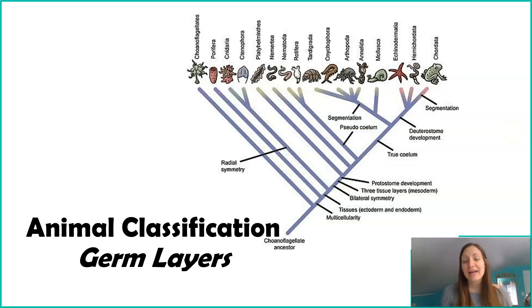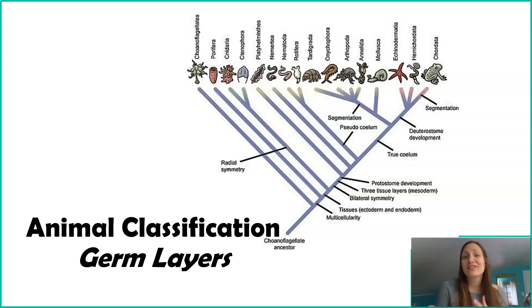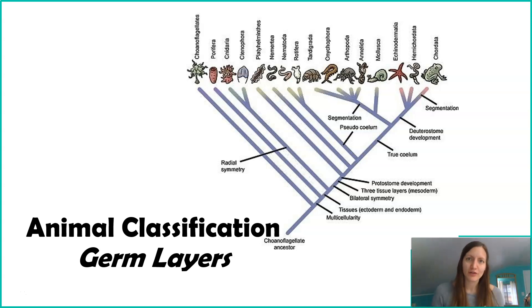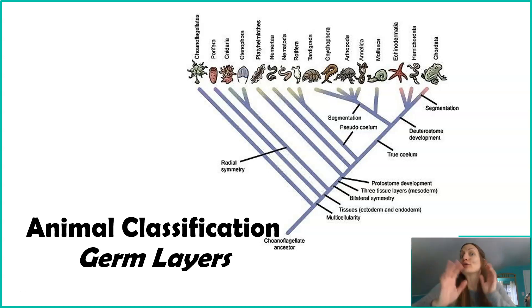One of the ways that we can classify animals, or at least talk about different characteristics that they share, is looking at their germ layers. And you're probably like, I have no idea what that is. So let's go ahead and jump in.